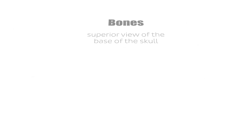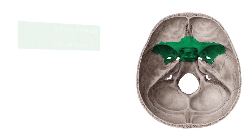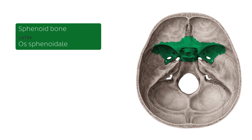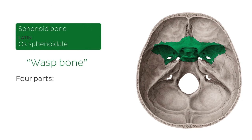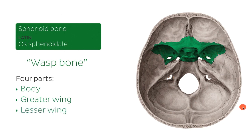The first bone is the one highlighted in green here. This is known as the sphenoid bone, sometimes referred to as the wasp bone due to its shape. It makes up the middle part of the base of the skull and is comprised of four parts, three of which we can clearly see from this superior view: the body, the two greater wings, and the two lesser wings.